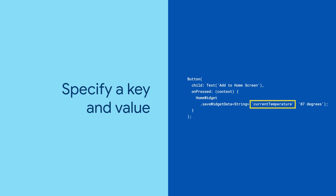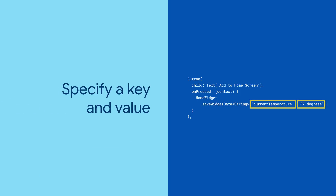Specify a key and value for the data, then use the updateWidget method to tell the underlying platform that it should re-render the home screen widget. Make sure to provide it with the ID of your home screen widget.